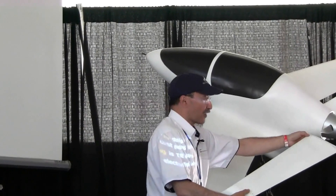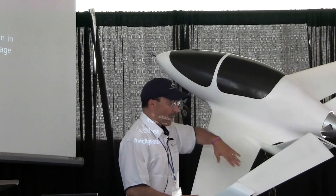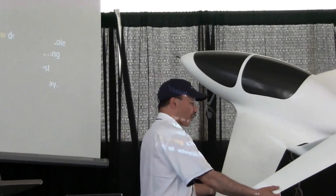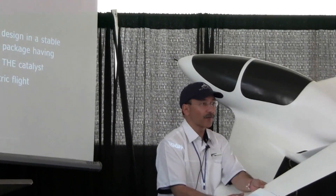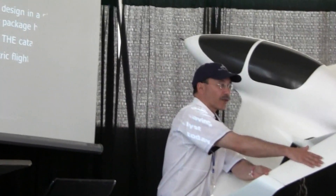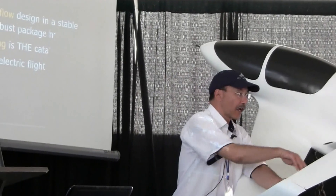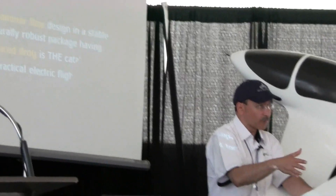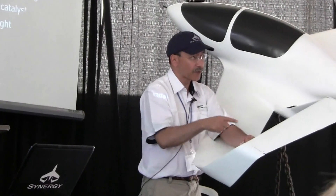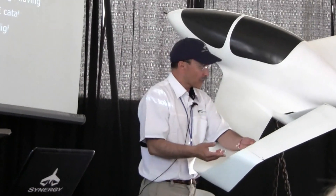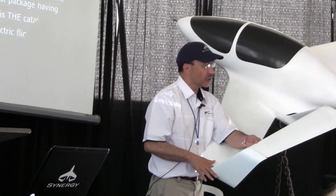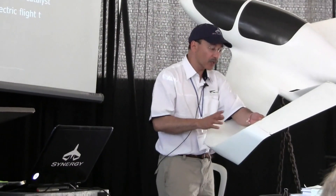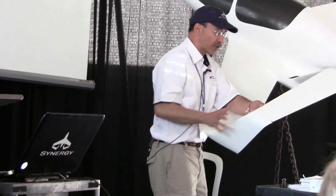We've got winglets on the tail, we've got winglets on the wing, and they're all connected together in a way that this is the pressure surface, this is the pressure surface, and this is the pressure surface, and we have suction on the inside. That means we don't have an argument between these surfaces over what happens in the corner, which means we don't have an interference drag condition of the same magnitude as you normally have, especially when you stagger it as we do at this intersection.